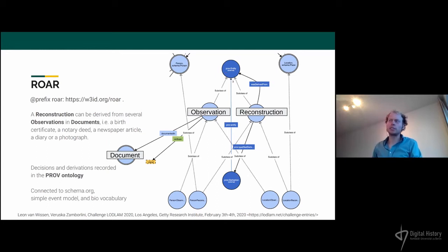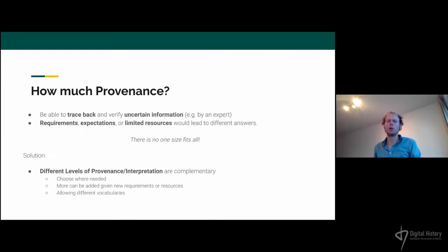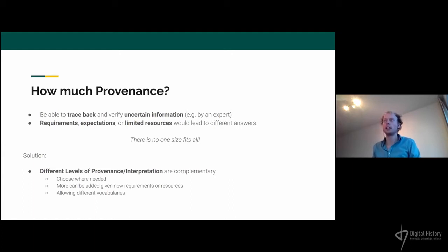For the Golden Agents project, the basic ROAR model is not sufficient. Just knowing something came from a particular source is not enough — we want to express in more detail: by whom was the decision made, on the basis of what, and what uncertainties are involved with the archive or the creation history of the material? We also realize that there are several different requirements and expectations in the field, so there is no one-size-fits-all model. We come up with a solution: an extension to the ROAR model that features different levels of provenance and interpretation, each complementary, so one can choose the level of detail needed.